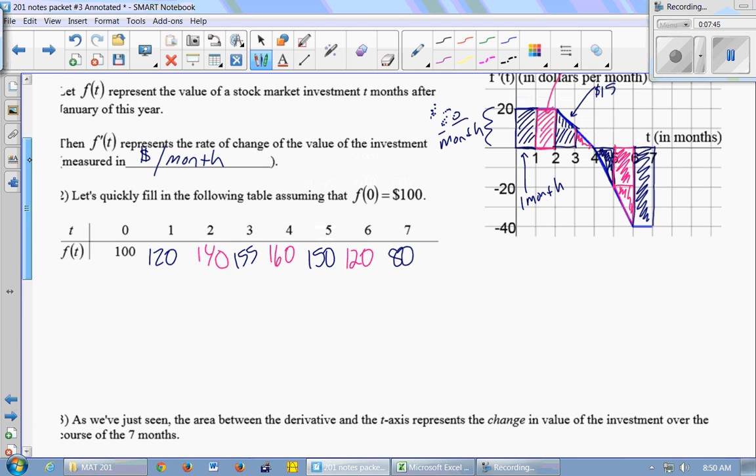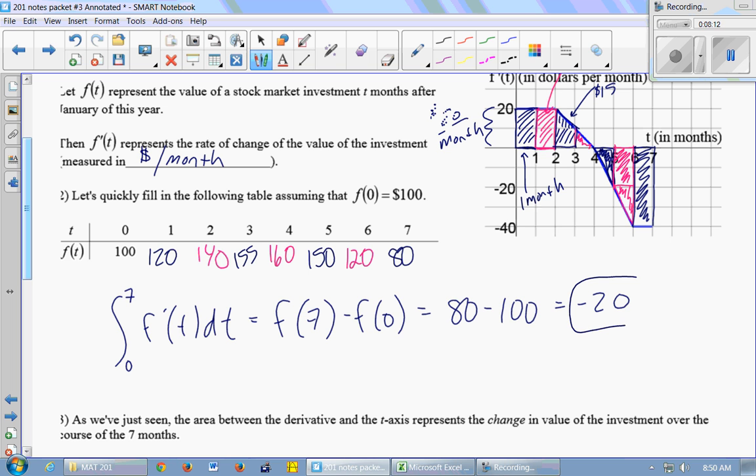f(7) - f(0) in our example is negative 20. So that's saying that we lost $20 over the course of seven months of investing. So my integral from 0 to 7 of f'(t)dt is equal to f(7) - f(0), which is 80 minus 100, negative 20. This is two different ways of calculating the total change in our investment. This represents a $20 loss over seven months, total change in the investment.